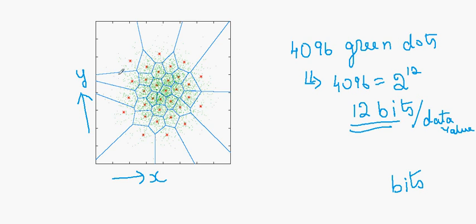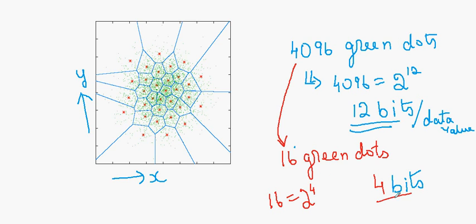So all these 4096 green dots are represented by these 16 red dots. So using vector quantization, 4096 green dots are represented by 16 red dots. 16 is nothing but 2 to the power 4. So we just require 4 bits to store 4096 green dots using vector quantization.